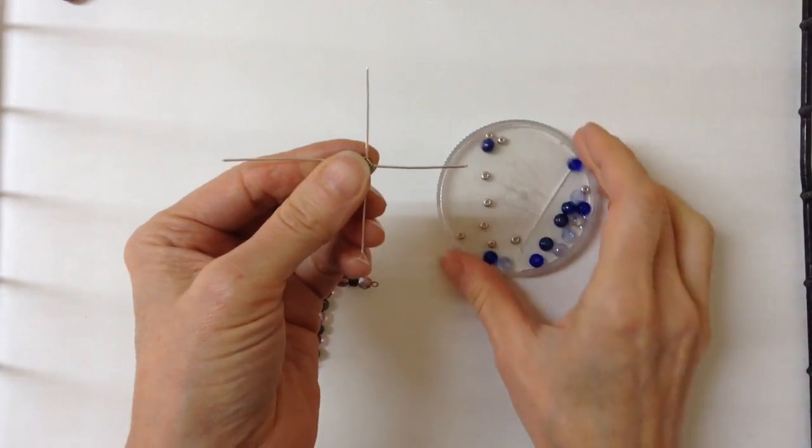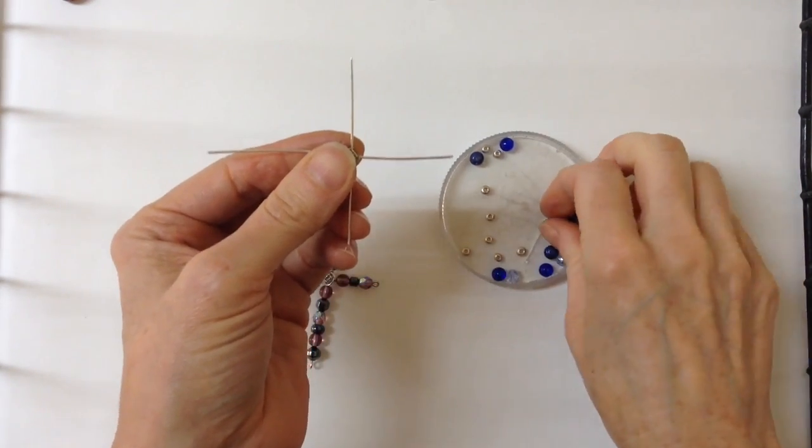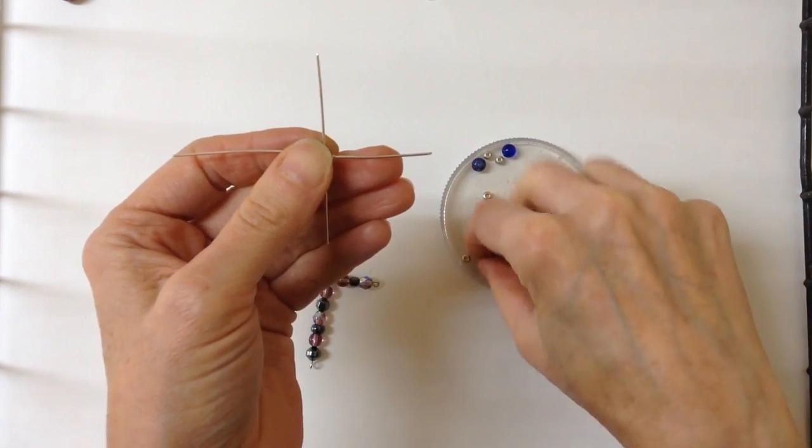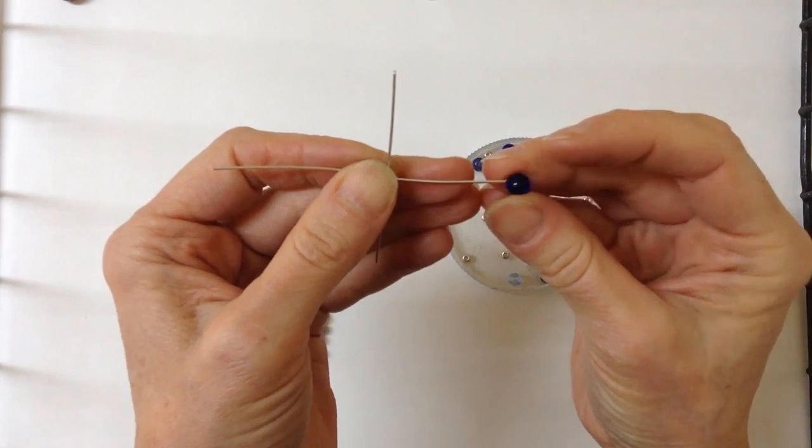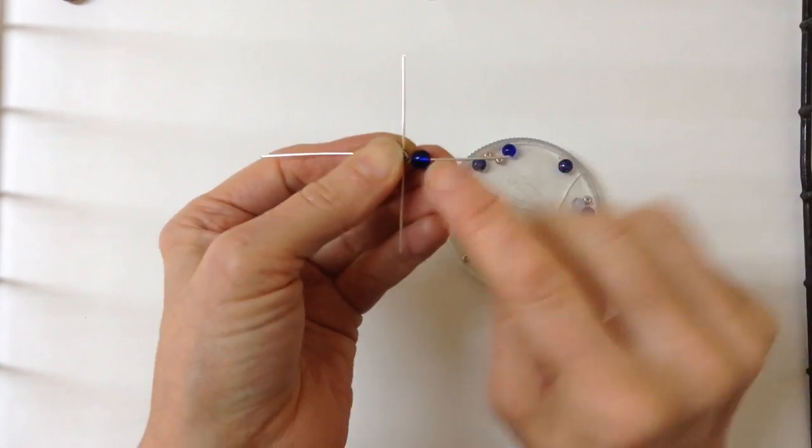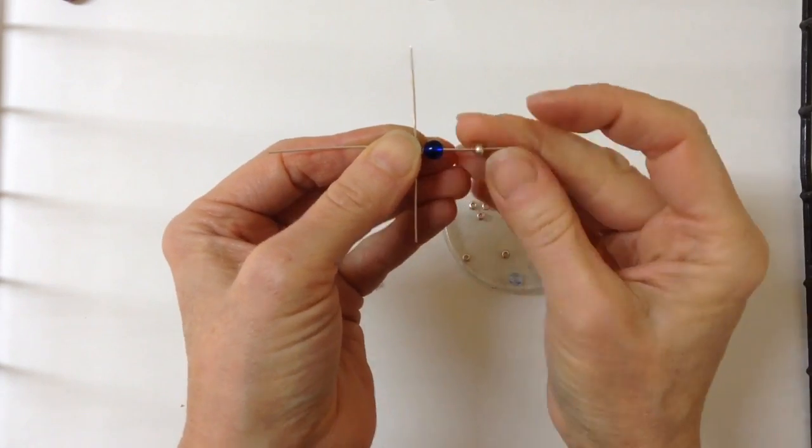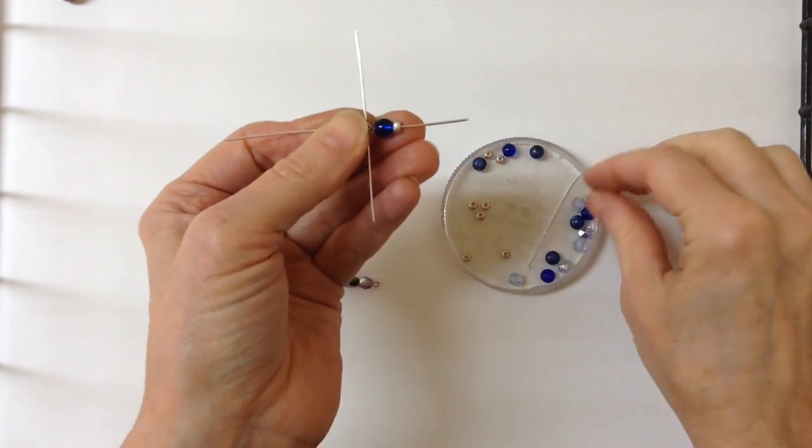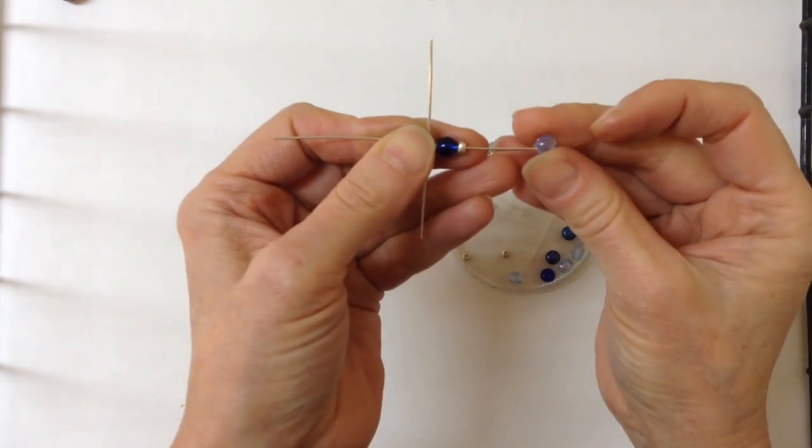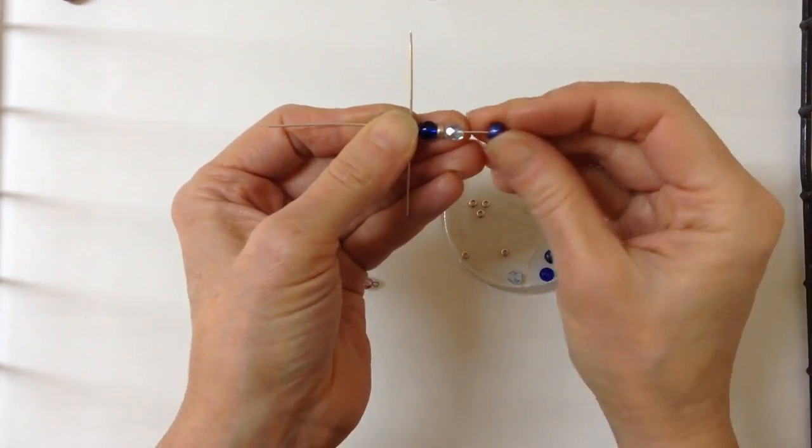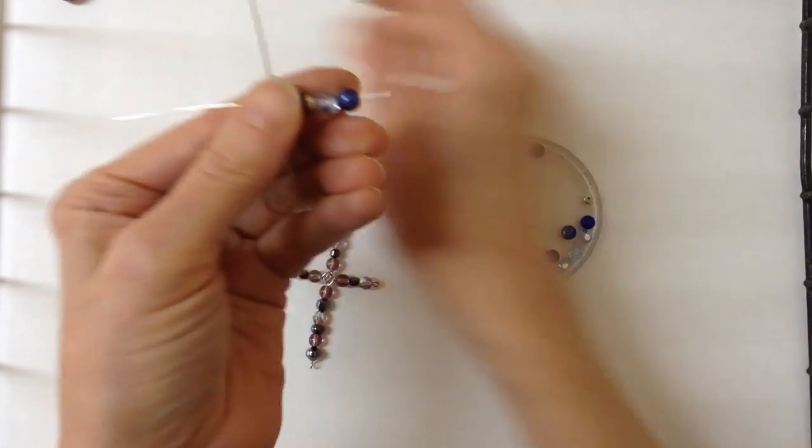We'll start with the top and I'm using blue beads. These are about four millimeters. Actually this is six millimeters. Then we can space it with some little silver beads if you like, and do another little colorful one. Whatever pattern you like.